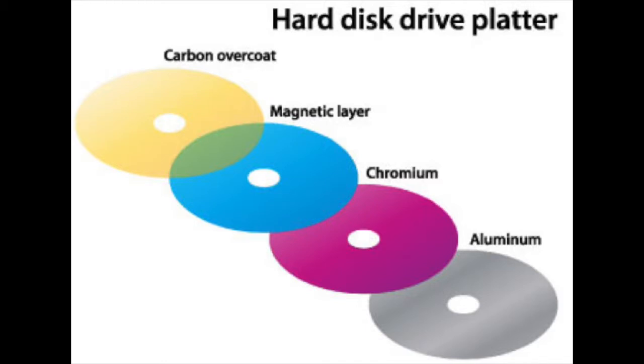There are four main layers that the platter is composed of. Starting from the bottom, a blank aluminum disc, or more recently glass, is used as a base. Then a chromium layer is added on top, which is followed by the magnetic layer where all the data is actually stored. Lastly, the entire plate is covered in a carbon overcoat for protection.